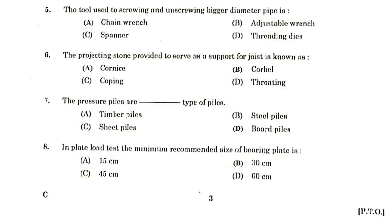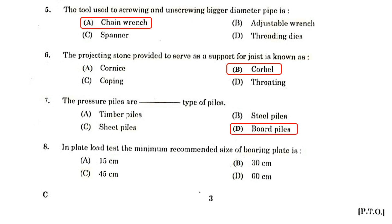The tool used for screwing and unscrewing bigger diameter pipe is known as a chain wrench. The projecting stone provided to serve as a support for a joist is known as a corbel. The pressure piles are a type of bored piles.